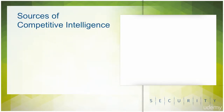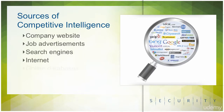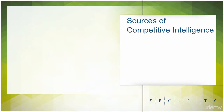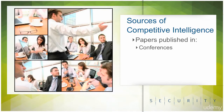Now we're going to talk about the sources of competitive intelligence. You can refer to the company website, job advertisements, search engines, internet, and online databases. You can also look at press releases and annual reports sent to stakeholders that are published to the public. You can also find out a lot from papers published in conferences, workshops, and journals. This helps you know what an organization is doing in a specific or specialized area.